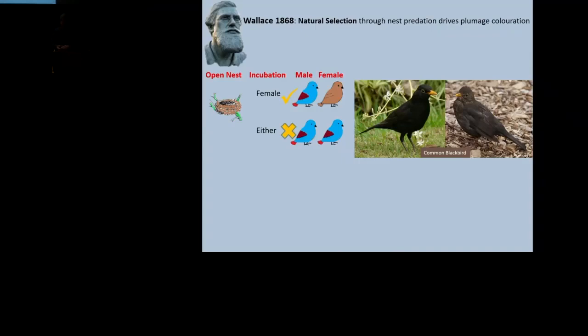Well, Alfred Russel Wallace had a completely different set of ideas. He believed that it was nothing, that it was complete nonsense, and that natural selection was what drove crypsis in females. And his prime example was the blackbird. He said the female blackbird was incredibly dull. It was dull because it alone did the incubation on the nest, and the nest was open, so it was vulnerable to predation. But there was no such pressure on males, so males could be colorful.